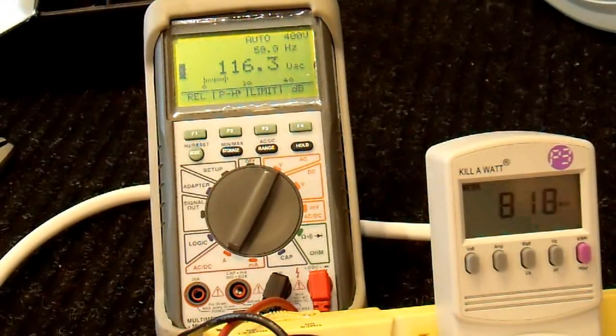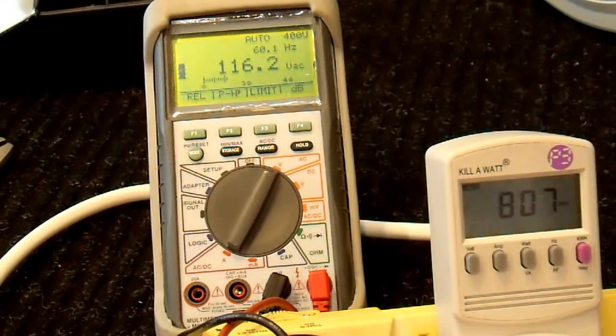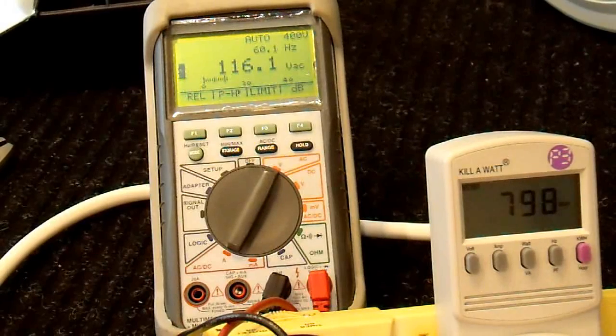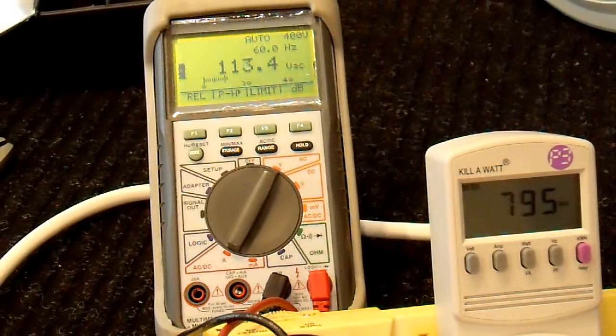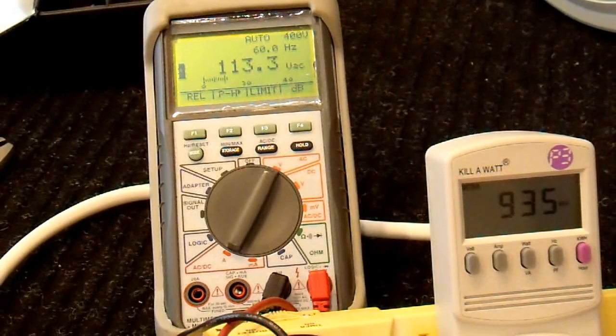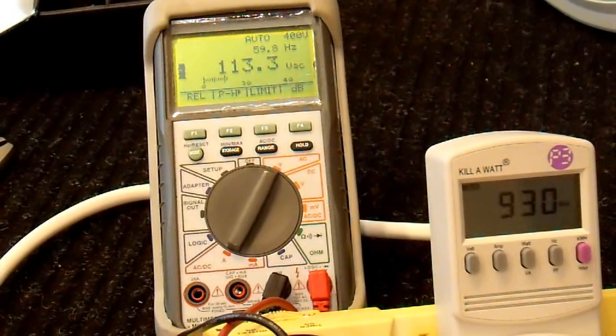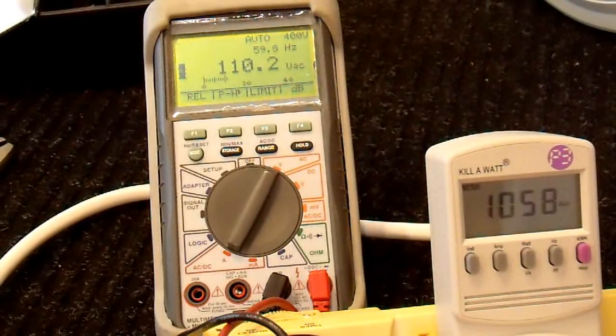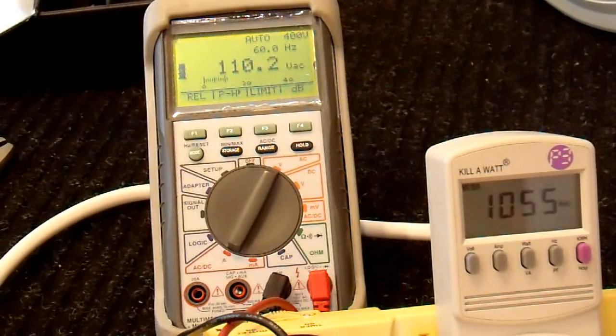Again, just like before, it's doing quite well. And now I will increase the load with these 100 watt light bulbs again. 900 watts, it sags a little bit. 1000 watts, now it's down to 110 volts.